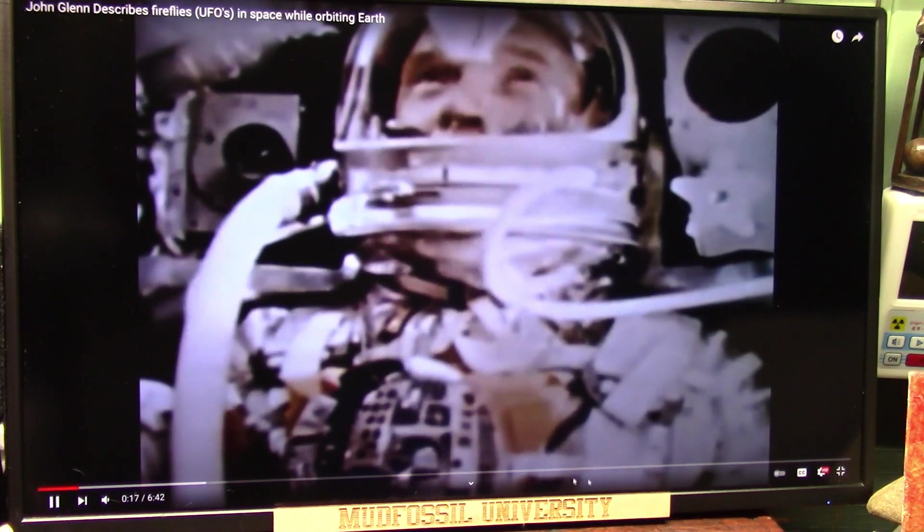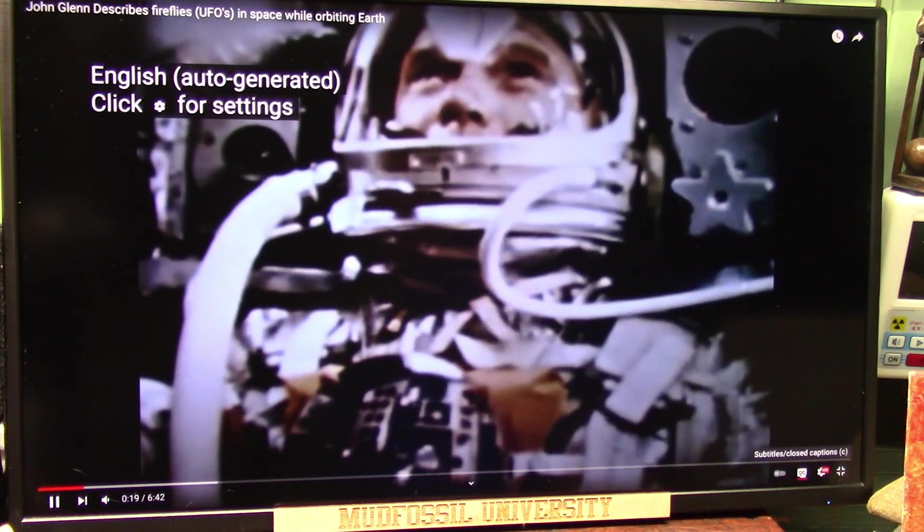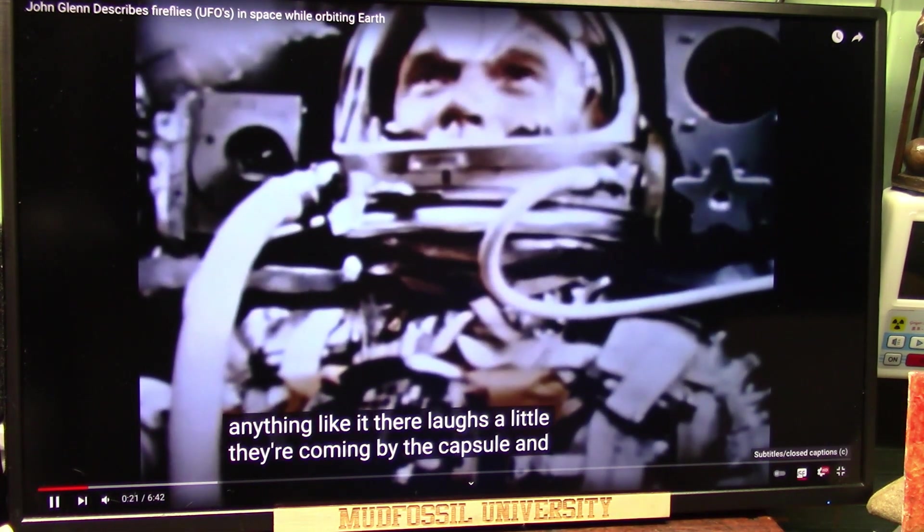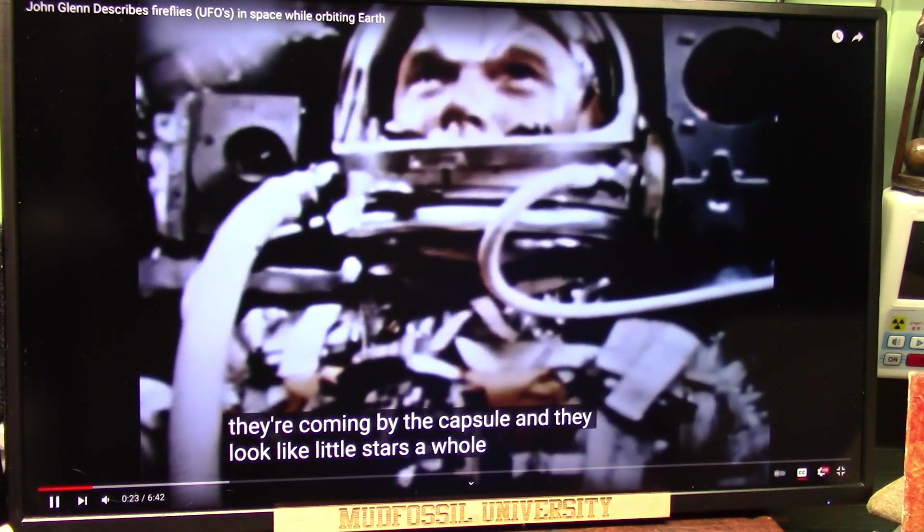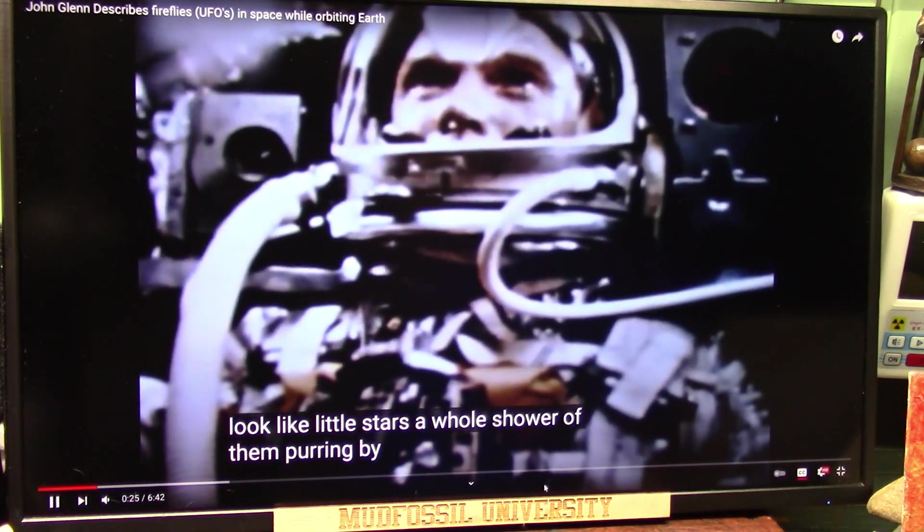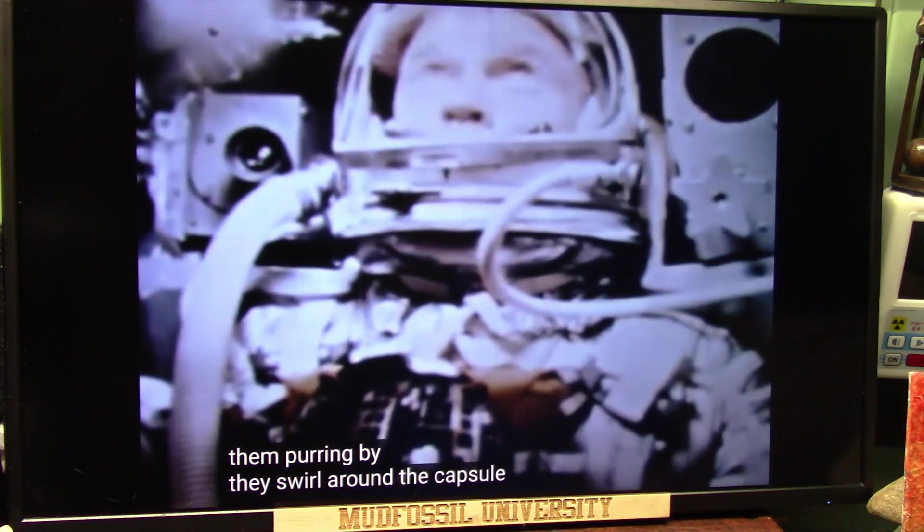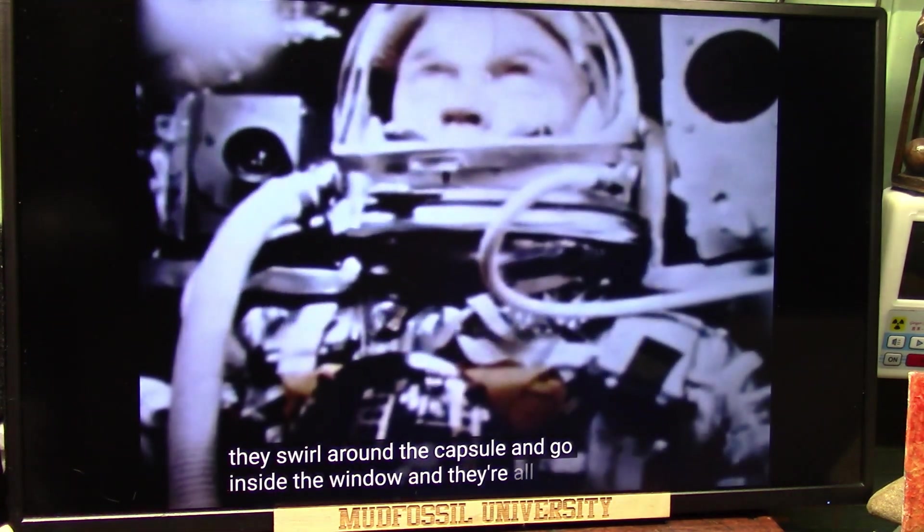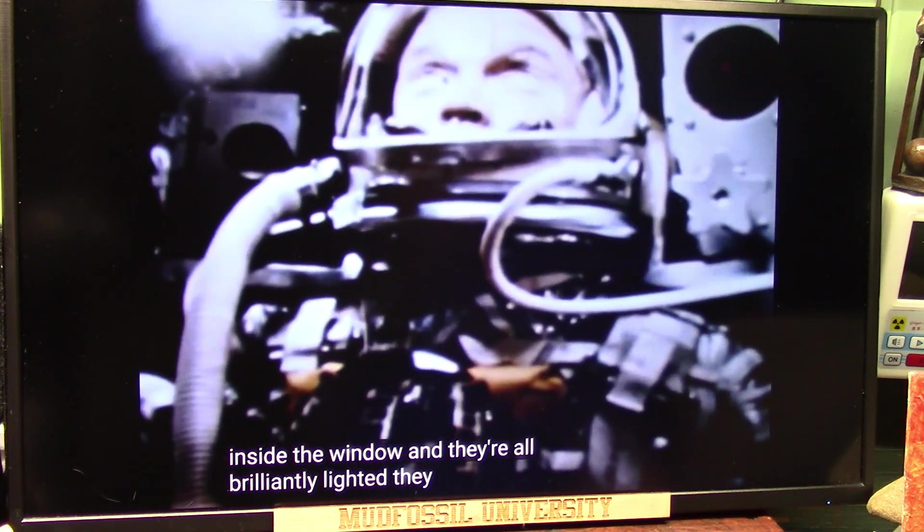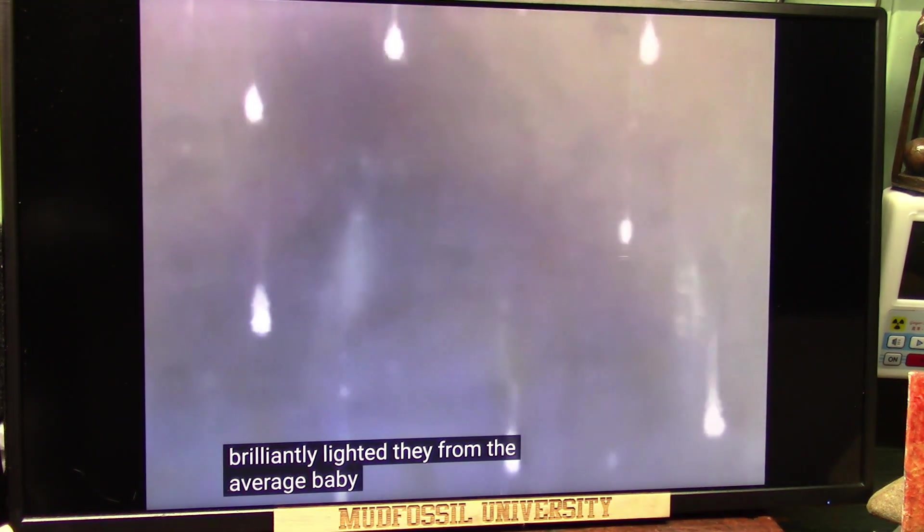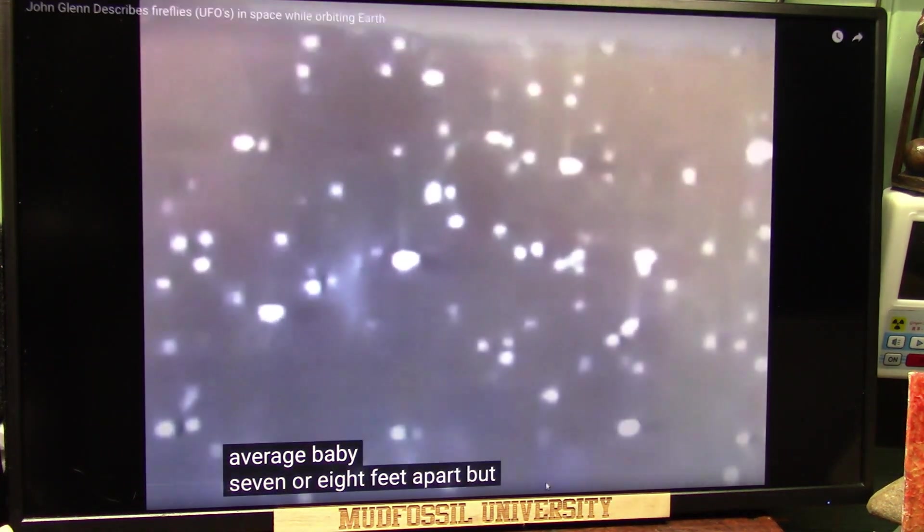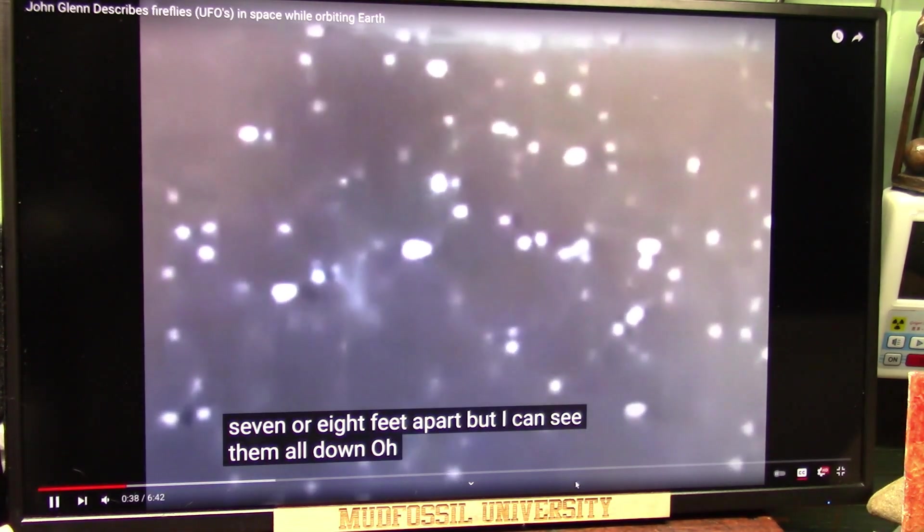This is space-length TV. They're luminescent. I never saw anything like it. They're around the little... They're coming by the capsule. And they look like little stars, a whole scour of them coming by. They swirl around the capsule and go in front of the window, and they're all brilliantly lighted.